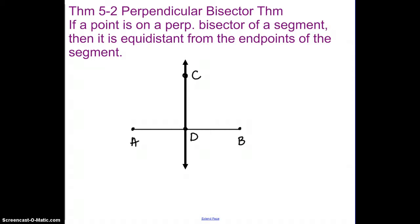In our first theorem, the perpendicular bisector theorem, perpendicular and bisector are two things we've dealt with before. Perpendicular has to do with the 90-degree angle, and bisector has to do with cutting things in half. So on this one, it's considering this line right here, CD, to be a perpendicular bisector.